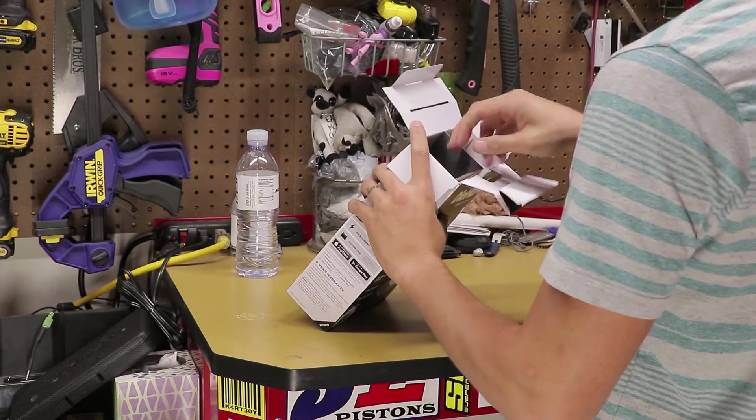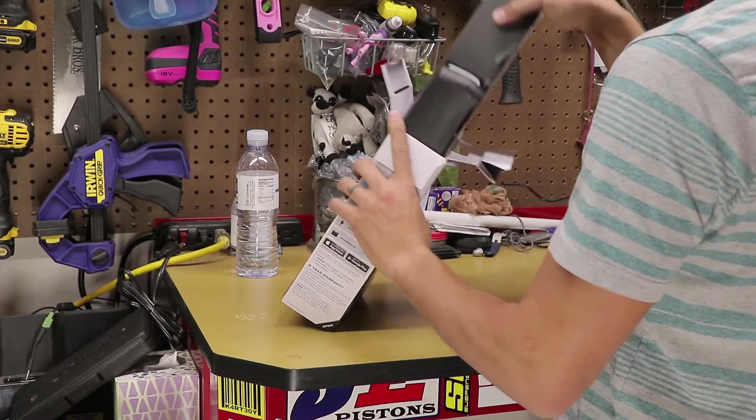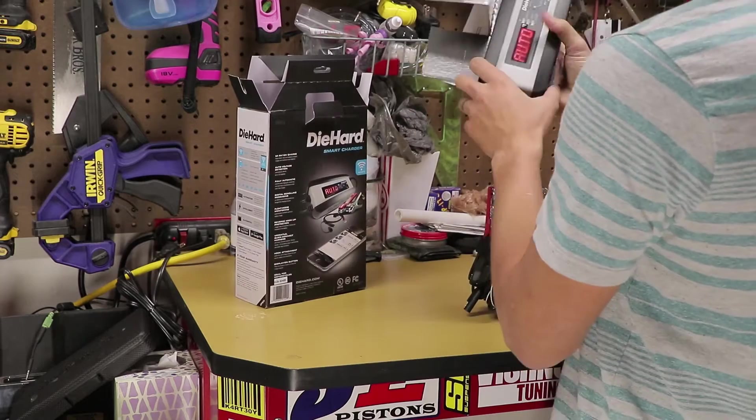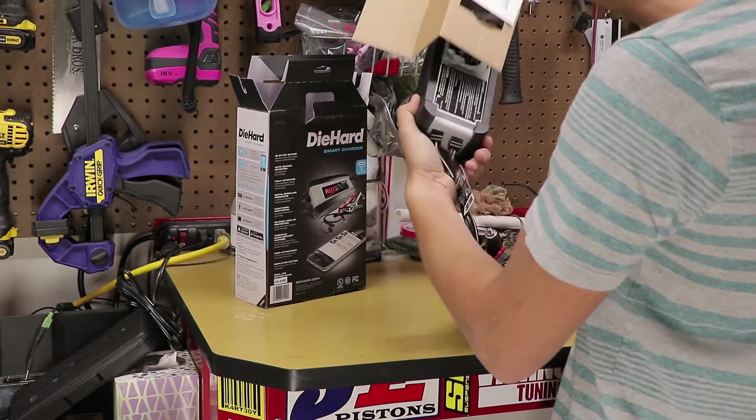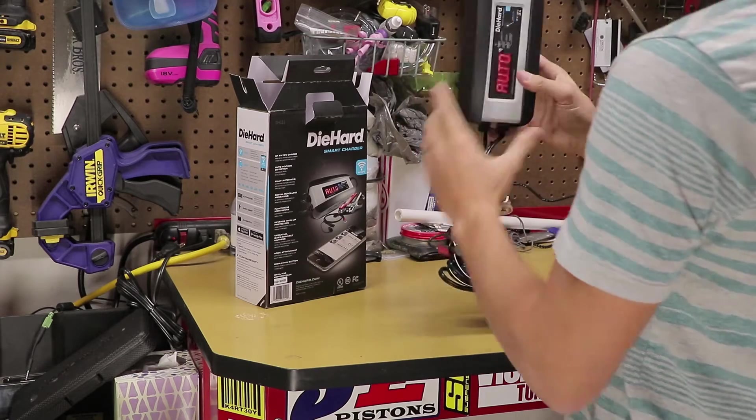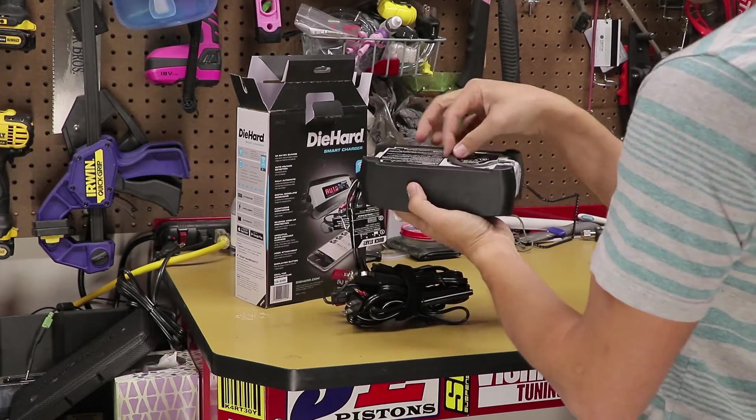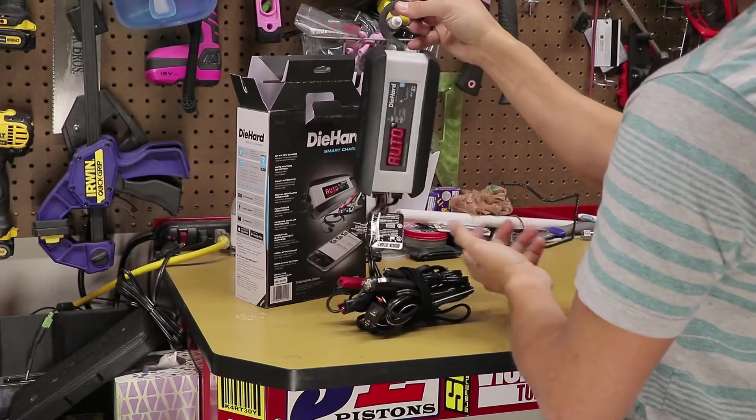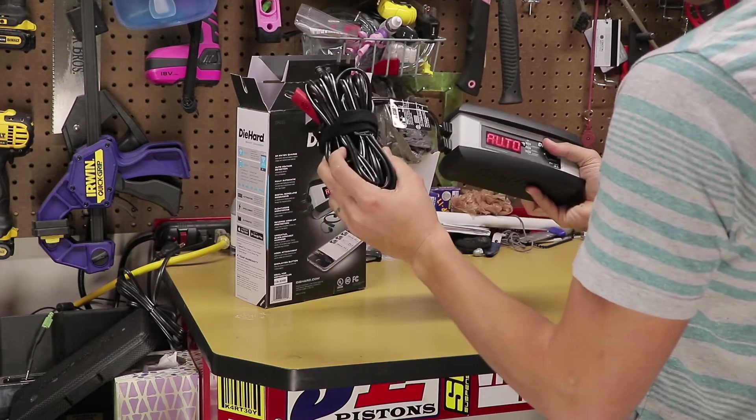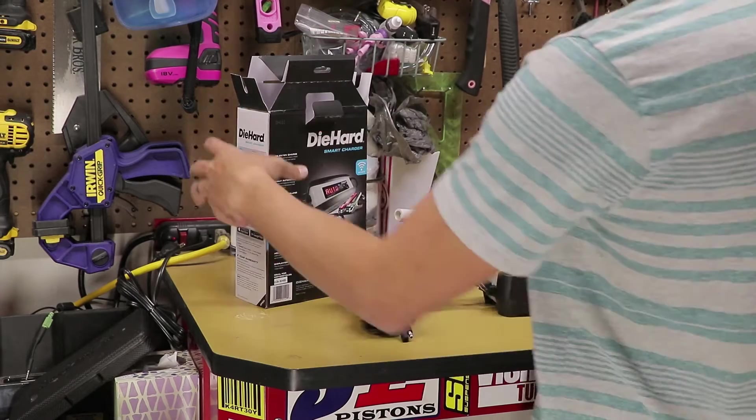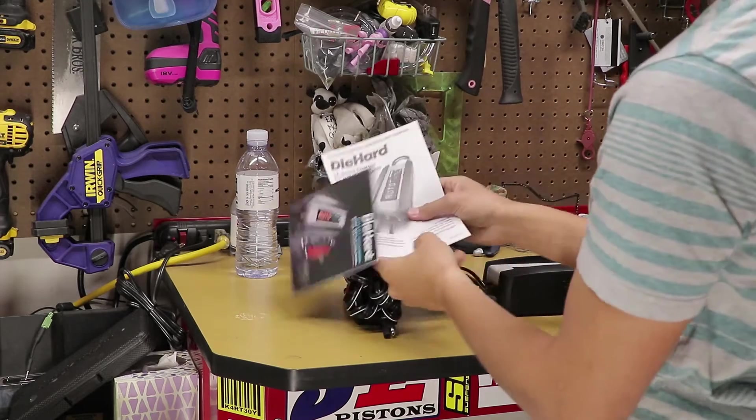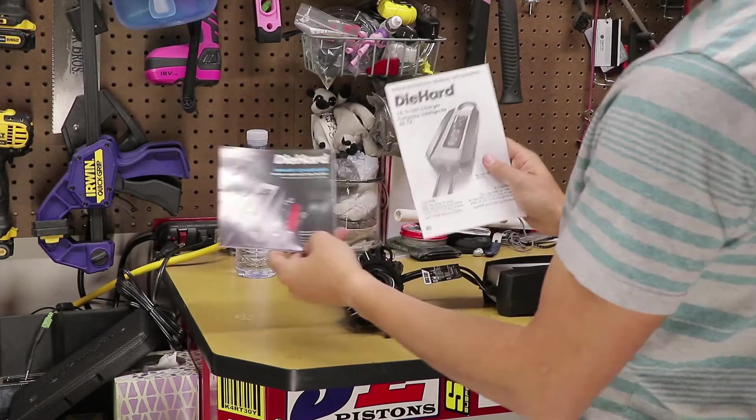So first thing, let's see here. Got the battery charger itself. Looks like it's got a little clip, a hook so you can kind of flip and close that. All the wires, and some instruction manuals.